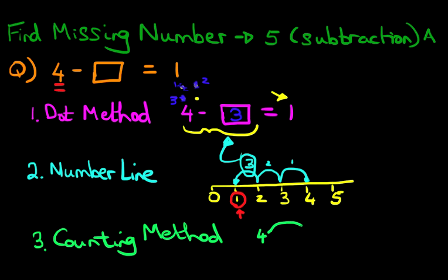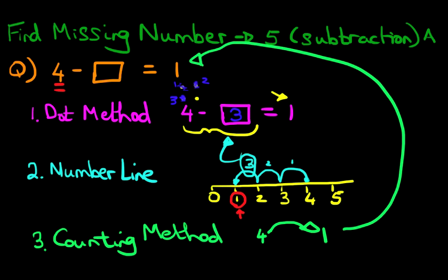From 4, we have to get to 1. From 4, we have to get to 1 because that's what it tells us in the question. So from 4 to 1.